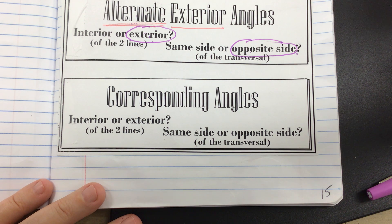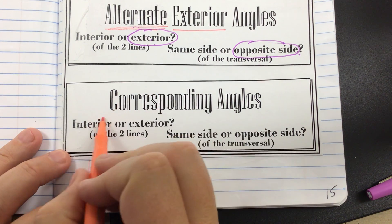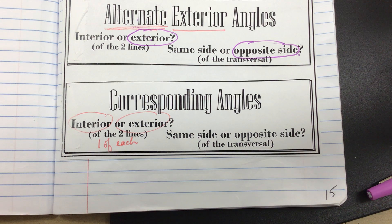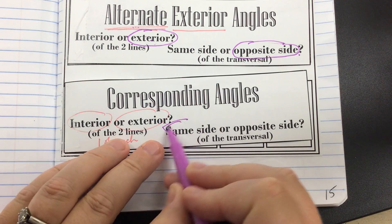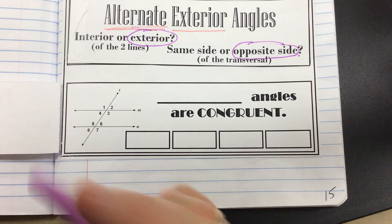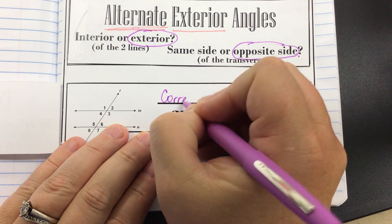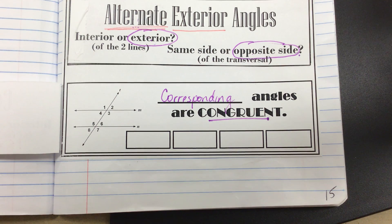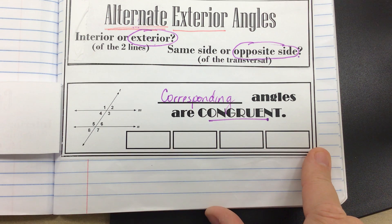The next one is corresponding angles. When talking about corresponding angles, remember those are angles in the same relative position. They're not both interior or exterior — technically one of them is interior and one of them is exterior, so there's one of each. Corresponding angles are on the same side of the transversal — maybe both on the top left or both on the bottom right. So if I open up the flip tab: corresponding angles are congruent. We have four pairs of corresponding angles that are congruent, which is why we have four boxes here.